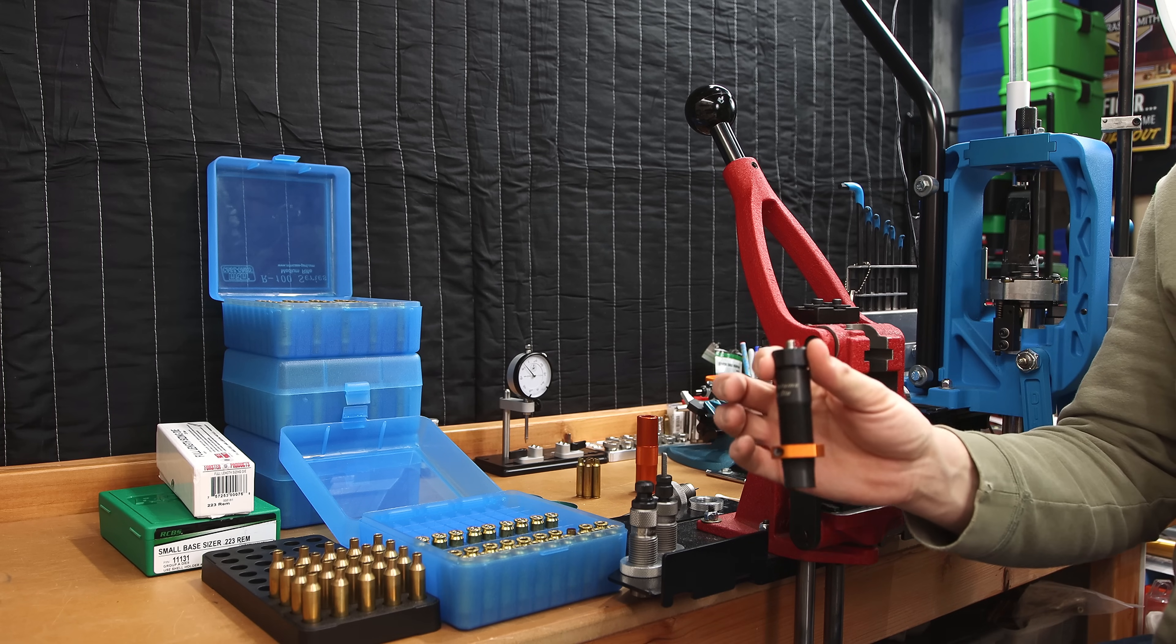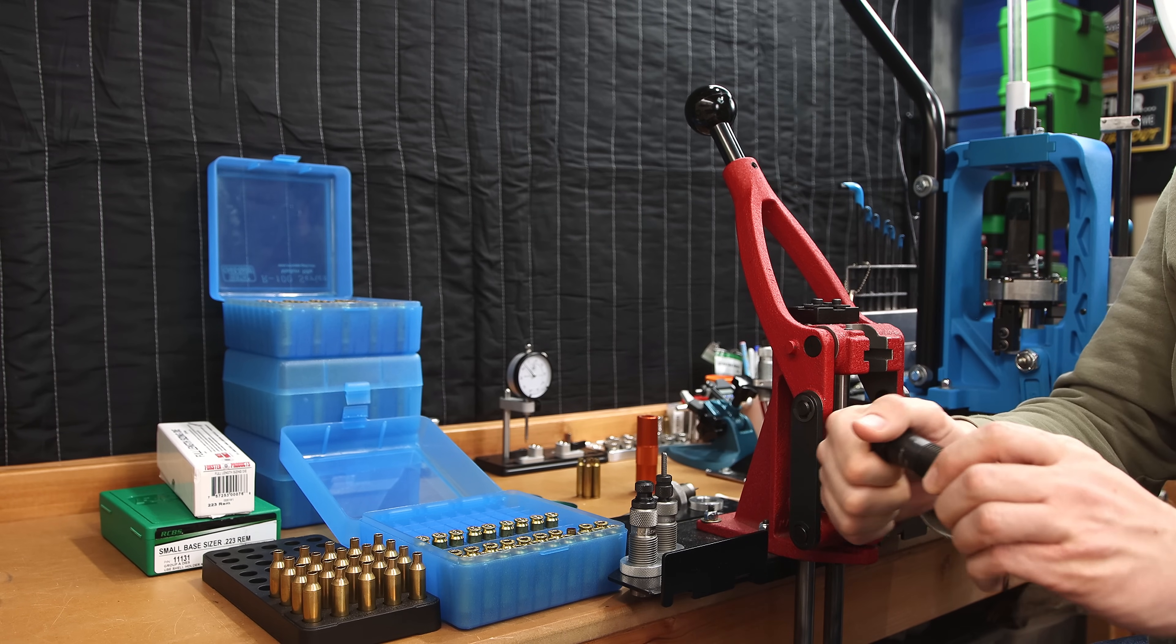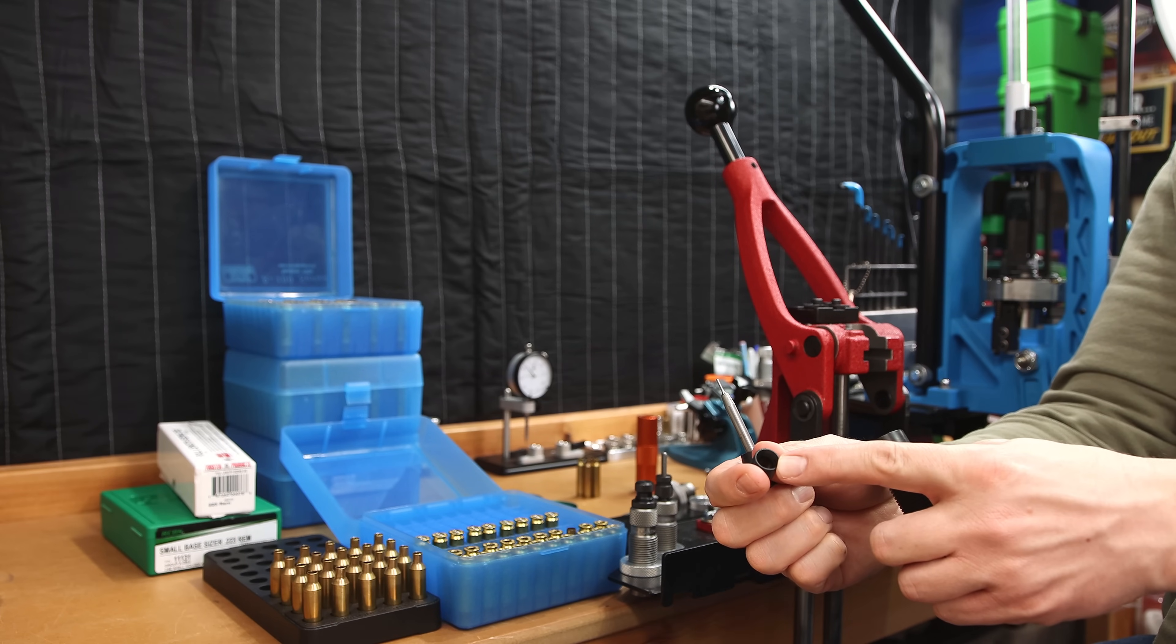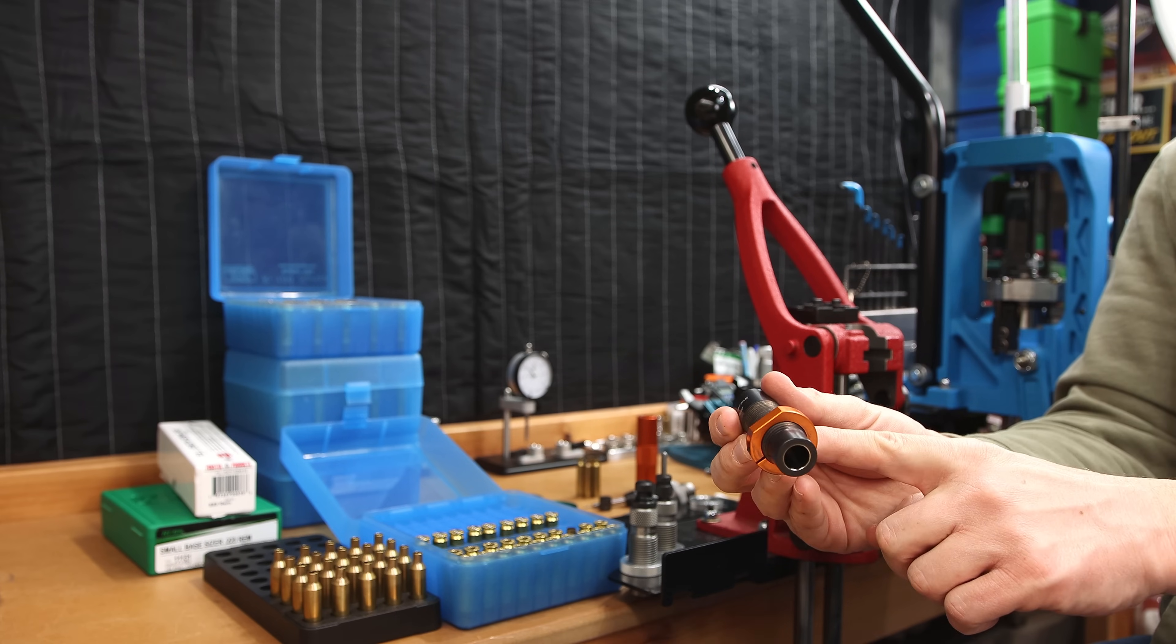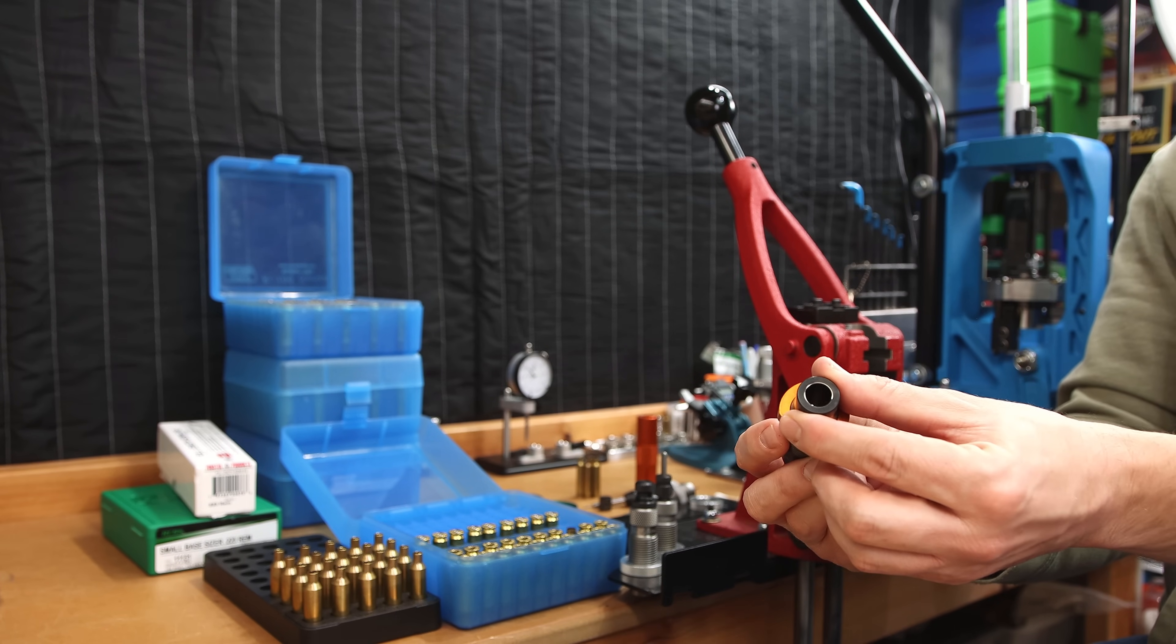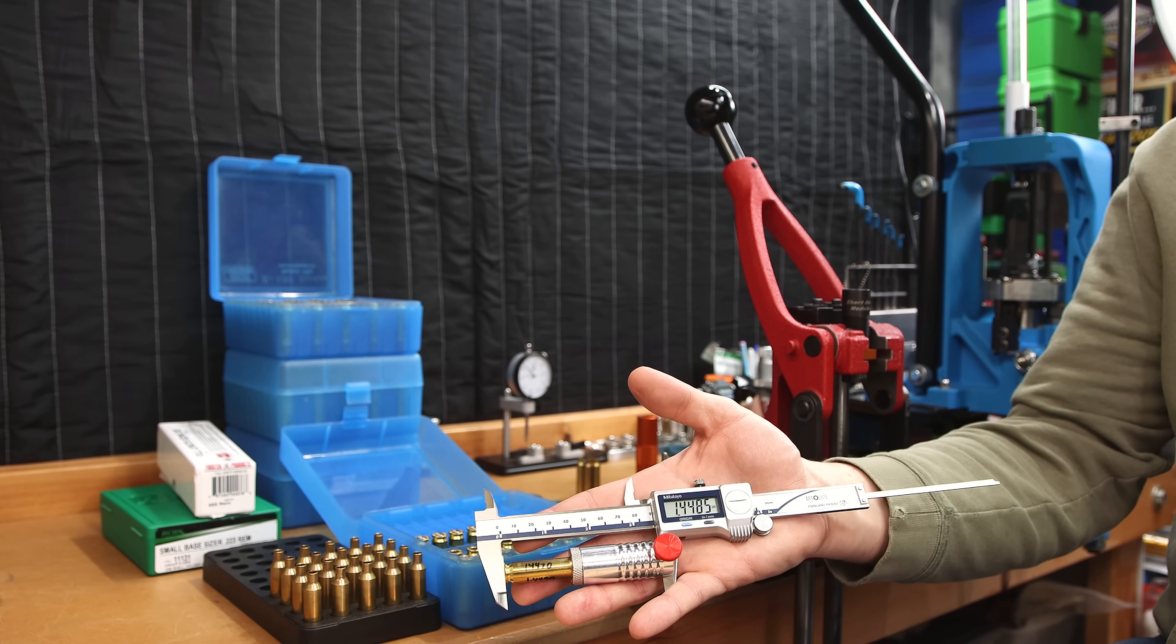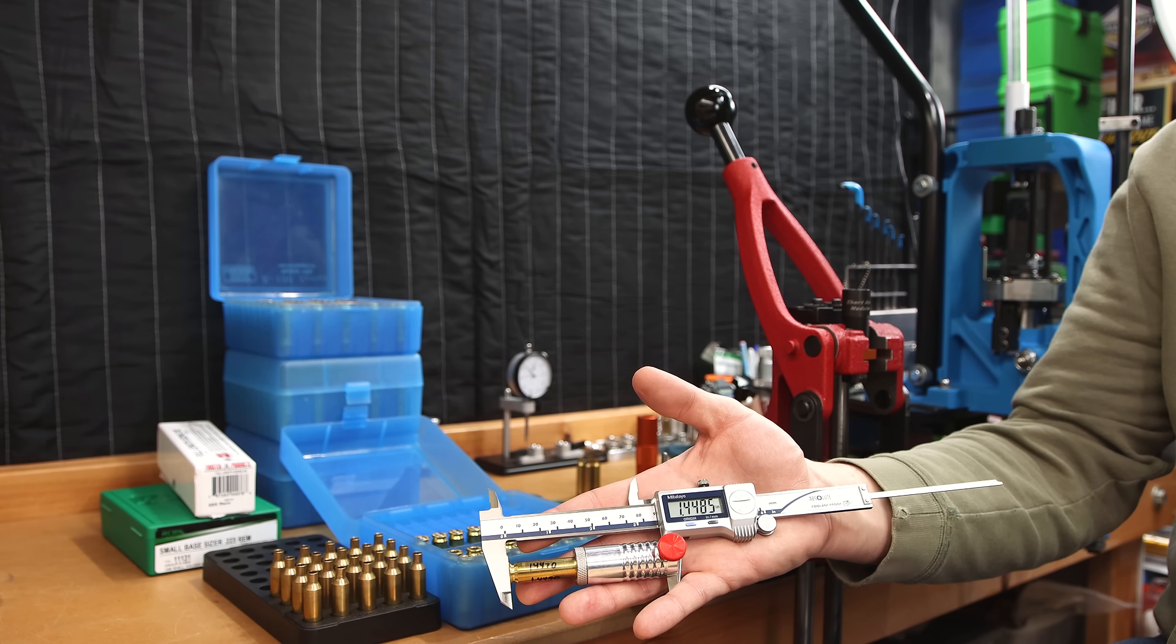Now in this case, I pulled out my Short Action Customs die because I can actually gut it, and since the bushing in this die sizes both the shoulder and the neck, and I can not lose my setting and just size the outside dimension of the case. Sizing only the body of the case got this to 1.4485. So the headspace measurement is larger than when it started.